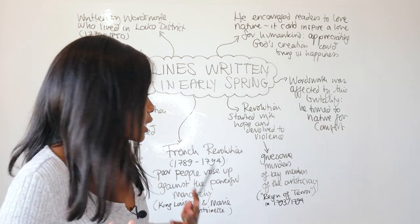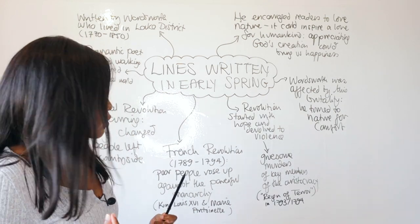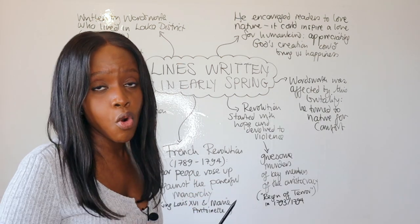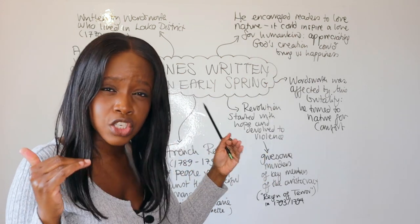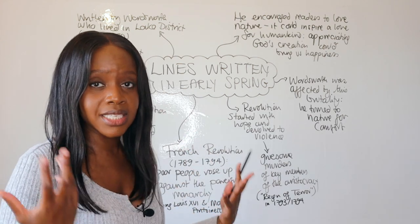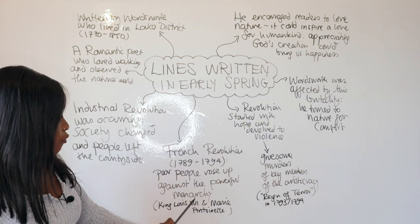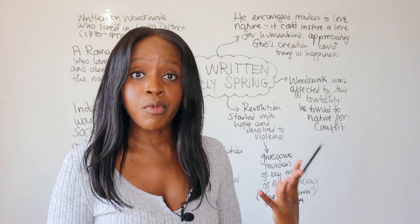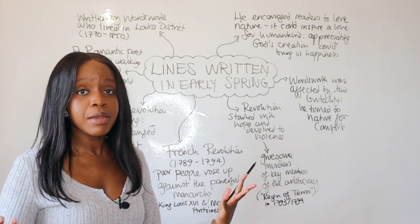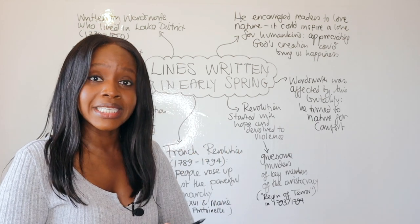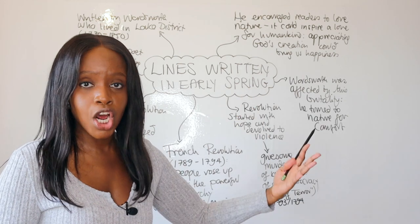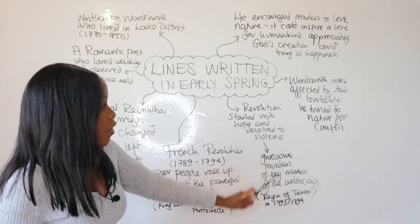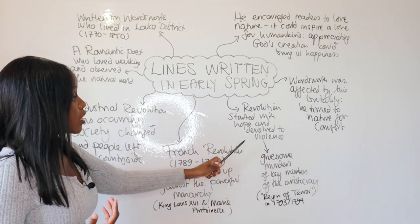The second revolution was the French Revolution, which occurred between 1789 and 1794. France at that stage had many very unhappy poor people and a very wealthy, detached monarchy. A lot of poor French citizens decided to revolt — they rose up against the powerful monarchy and overthrew them. King Louis and Marie Antoinette were executed, and France became a republic. When it initially happened, it was seen as holding a lot of promise for positive change, even by Wordsworth and many poets in the UK.